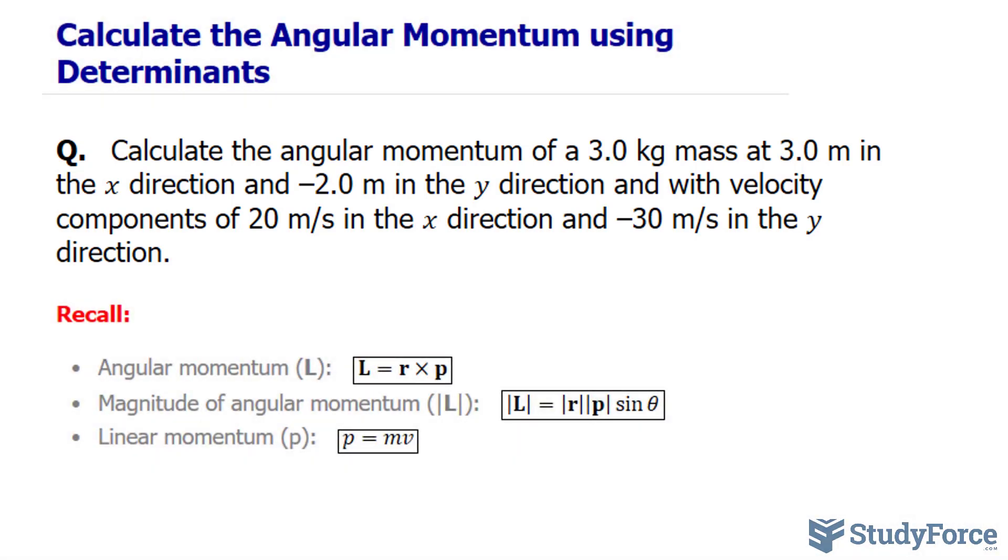Now before we start the process, remember that angular momentum is a vector, and vectors have x, y, and z components. To calculate angular momentum, we have to take the cross product between the radius and the linear momentum P. Both of these are vectors and they also have x, y, and z components.